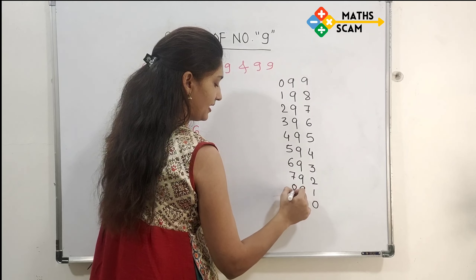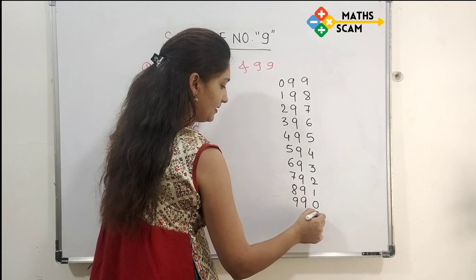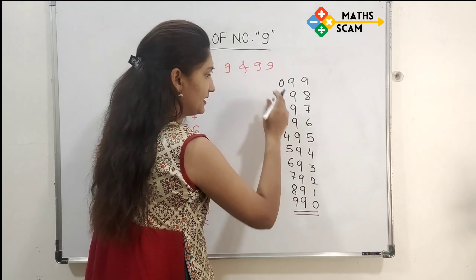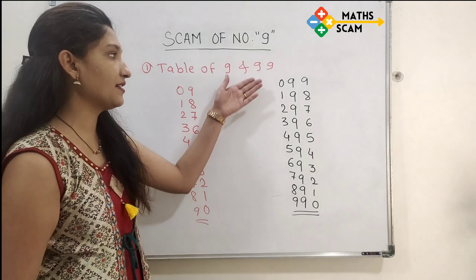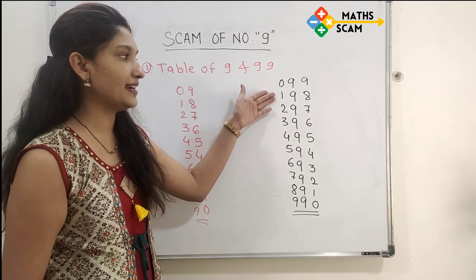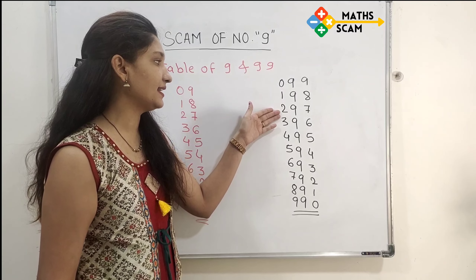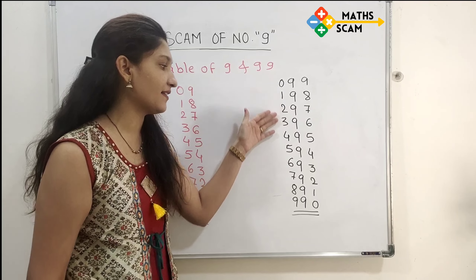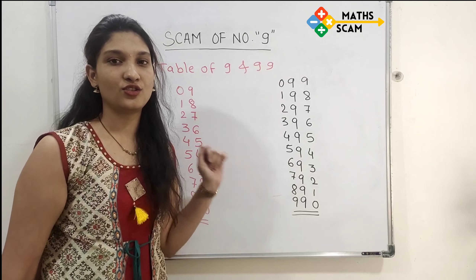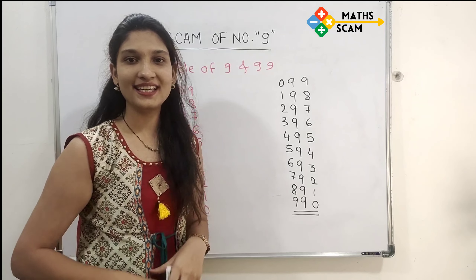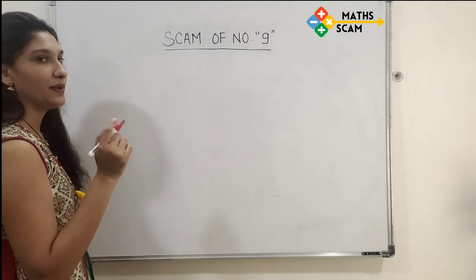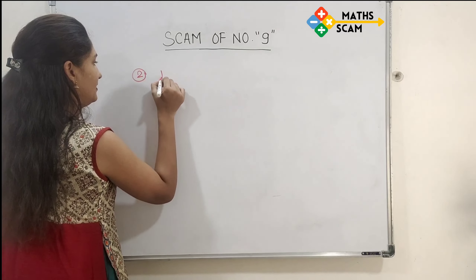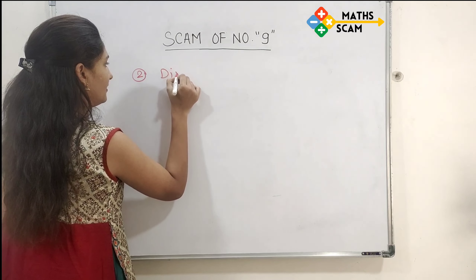The left side ascending sequence is: 0, 1, 2, 3, 4, 5, 6, 7, 8, 9. This is the table of 99. 99 ones are 99, 99 twos are 198, 99 threes are 297, and so on.